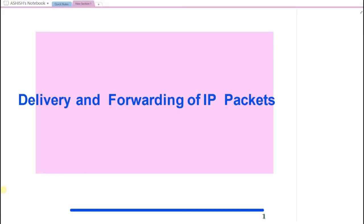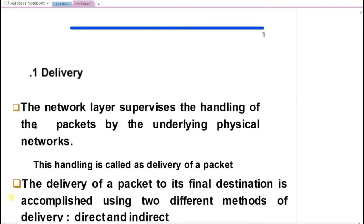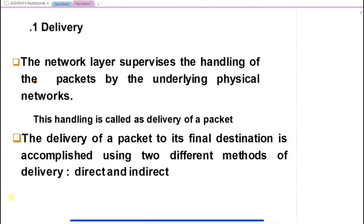The next topic is delivery and formatting of packets. We will discuss how to forward packets from the source to destination, how packets are forwarded from router to router, and how the routing table is maintained. Delivery means we are interested to find out how the packet is delivered from one machine to another machine.